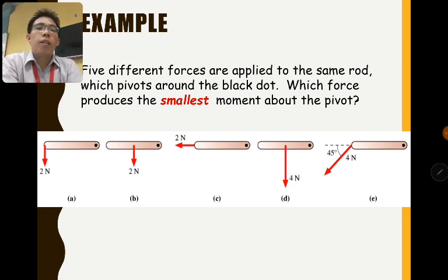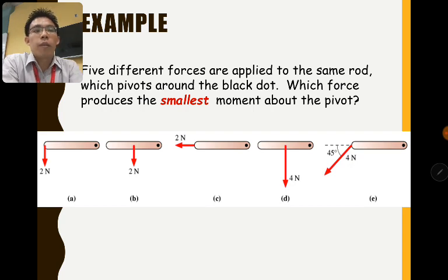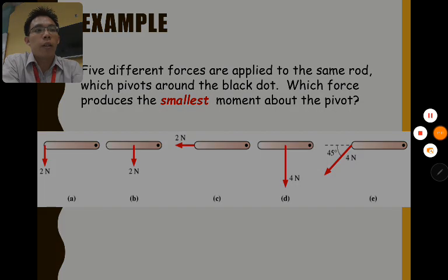Now we have five different forces applied to the same rod — which force will produce the smallest moment about the pivot point? We'll continue this in the next video.